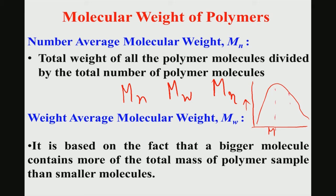In the molecular weight distribution — plotting frequency or number versus molecular weight — one can define where Mn and Mw fall within the distribution for a given polymer.